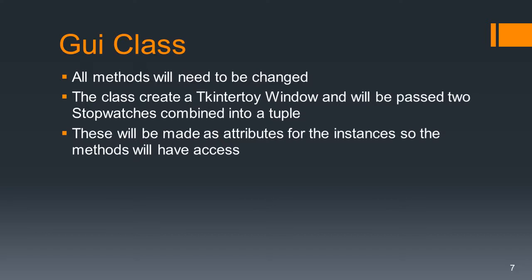All the methods in our GUI class are going to have to be changed. The class will create a TK Entertoy window as before, but this time it's going to be passed two stopwatches which will be combined into a tuple. These are going to be made as attributes for the instances so the methods will have access.